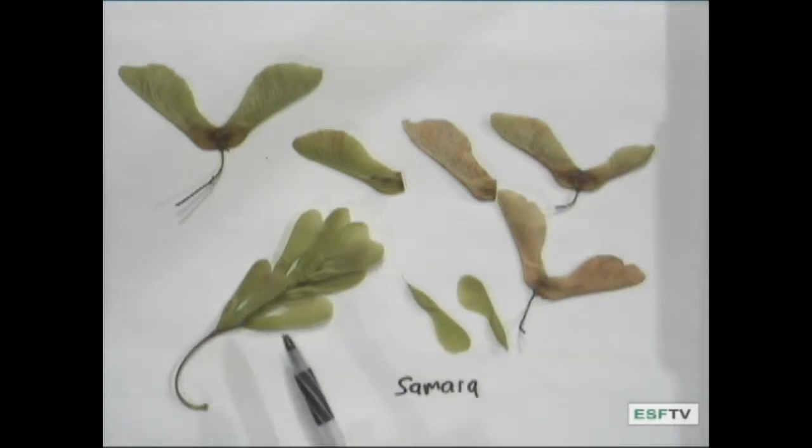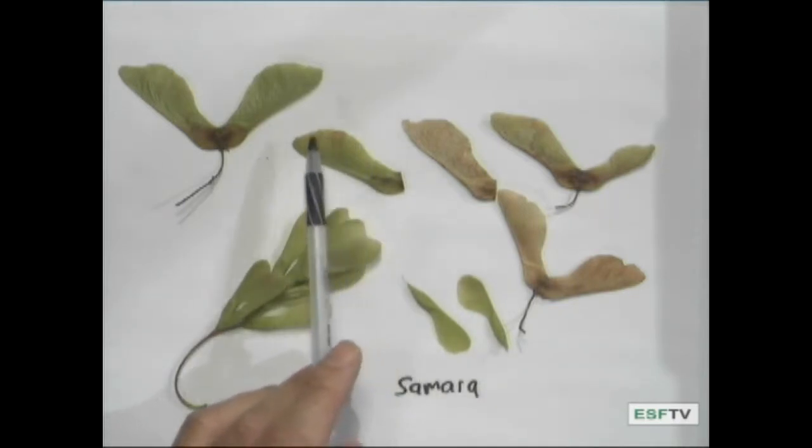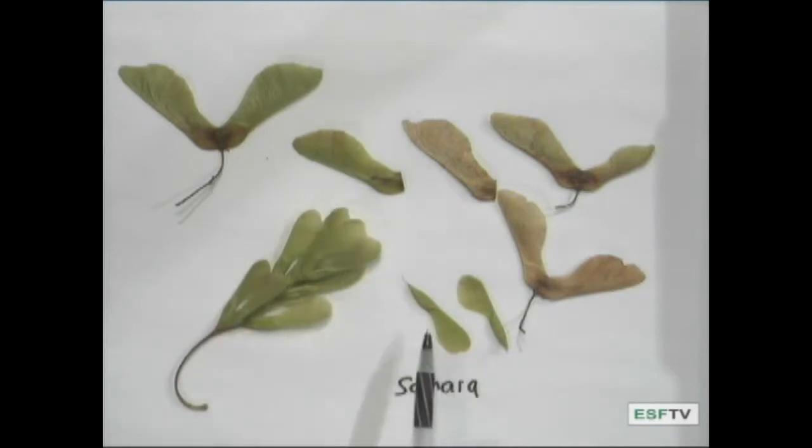And of course, you have different species. This is another species of the maple, and it puts out a Samara that has many of the same characteristics but is different in numerous ways. This seed is quite flat. This seed is quite elongate. The tail of the Samara of this one is quite large, whereas the tail of this Samara is quite small.